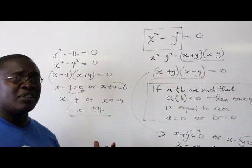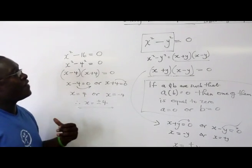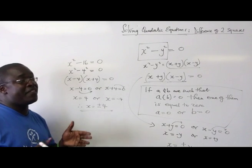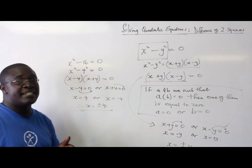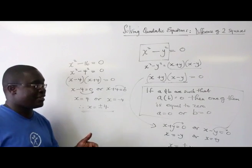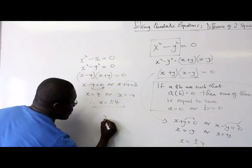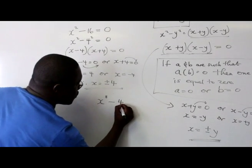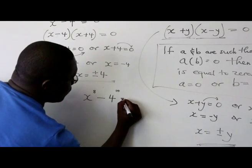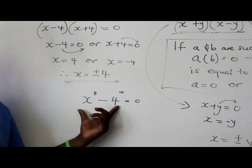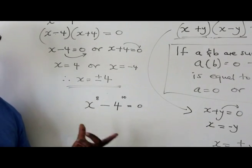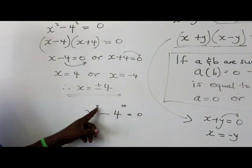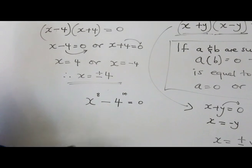But if you remember very well, you will know that the difference of two squares applies for all differences that have even powers. So let's say it was x⁸ - 4¹⁰ = 0. We can apply the laws of difference of two squares because we have even powers and a negative sign.